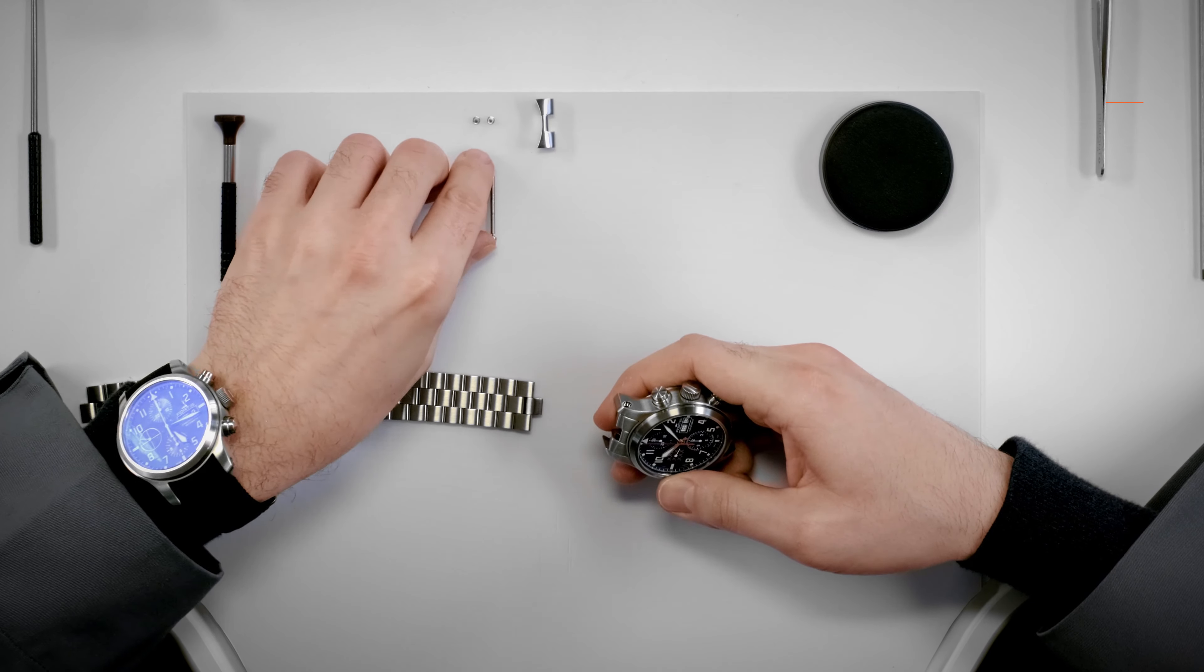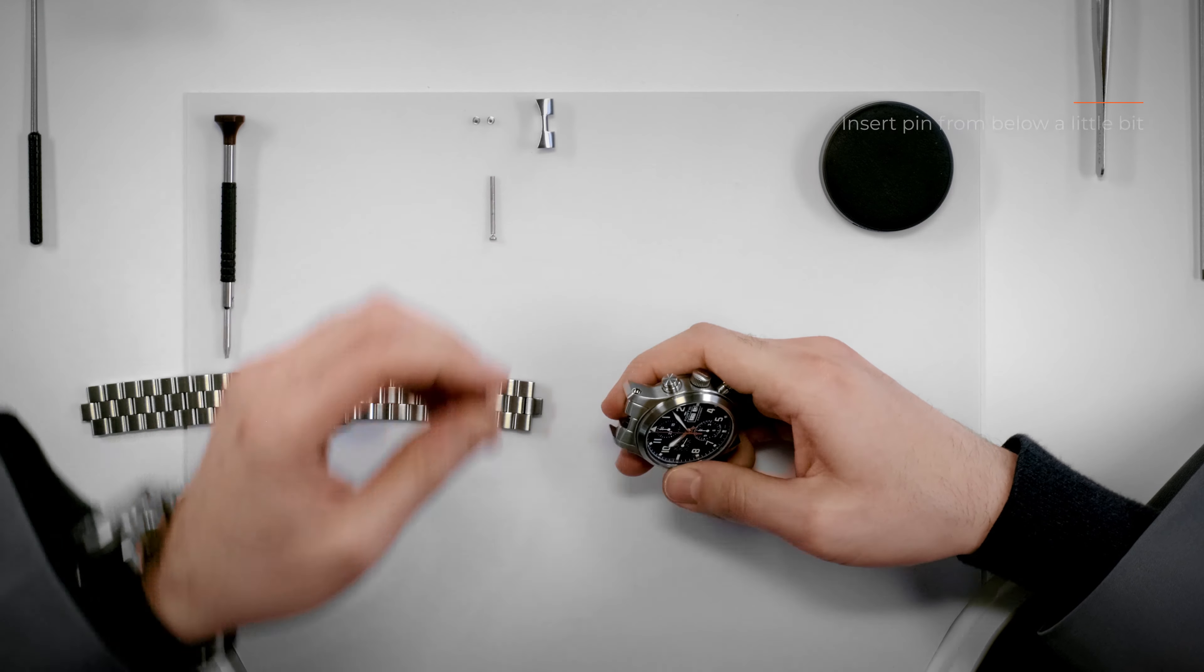Now, insert the pin a little bit from below. Then, you position the bracelet and turn the watch. Make sure that you take the right end of the bracelet so that the buckle later opens and closes the right way around.